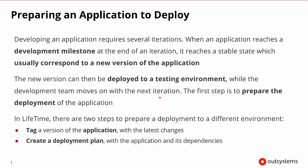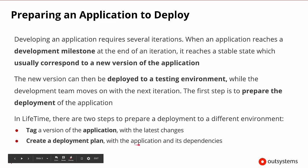The first step is to prepare the deployment of that application. In Lifetime, there are generally two steps to prepare a deployment for a different environment: tag the version of the application that has its latest changes in it, and create a deployment plan so that the application and its dependencies can be moved to the new environment.